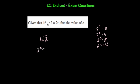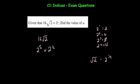So 16 is 2 to the power of 4. Let's write that as 2 to the power 4 times root 2. Remember root 2 is the same as 2 to the power of a half — the square root is the same as to the power of a half. So this is 2 to the power of 4 times 2 to the power of a half. When you multiply indices over the same base number you add the indices, giving 2 to the power of 4 and a half, or 4.5.